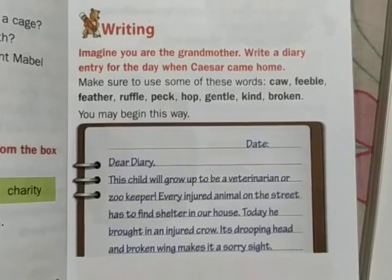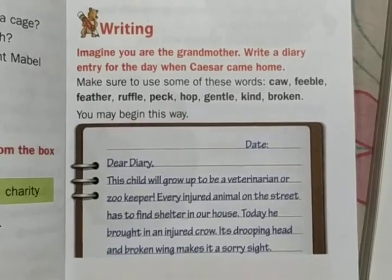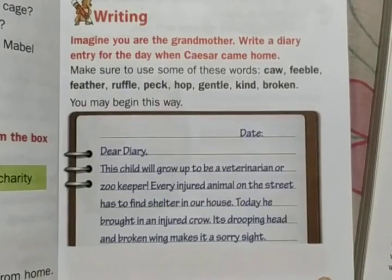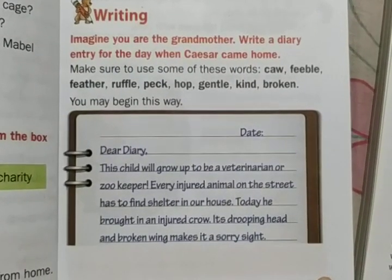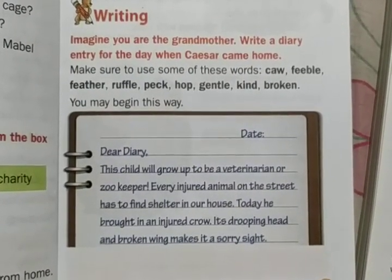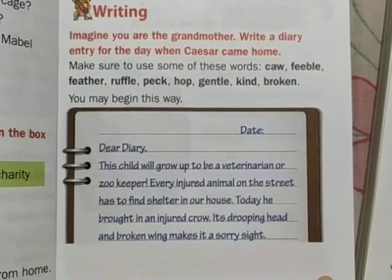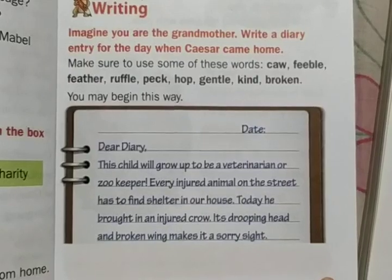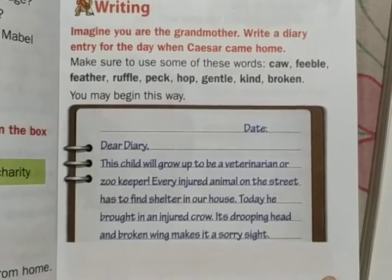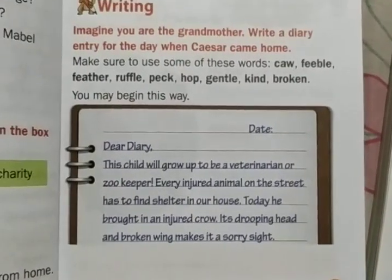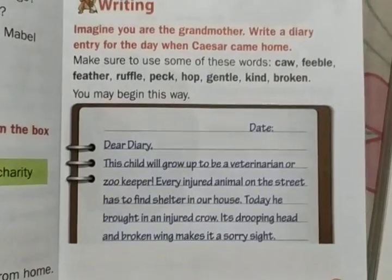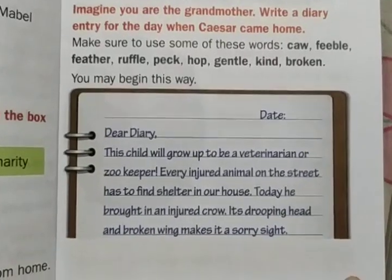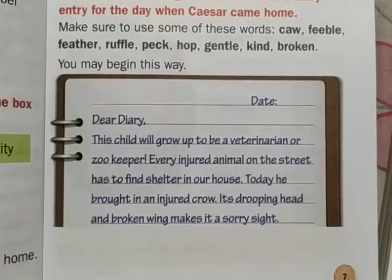The next question is the writing part — creative writing. Imagine you are the grandmother and write a diary entry for the day when Kesar came home. Make sure to use some of these words: caw, feeble, feather, ruffle, peck, hop, gentle, kind, broken. The beginning of the diary entry is already given; we just have to continue.